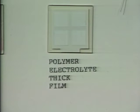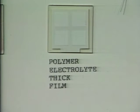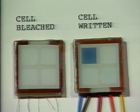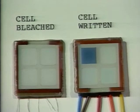We now take the front electrode and the rear electrode and sandwich them together, sealing around the periphery in order to exclude moisture from the system. We see here a pair of two-by-two cells. The one on the left-hand side has every pixel completely bleached, and the one on the right-hand side shows one pixel written.